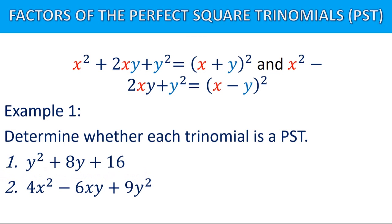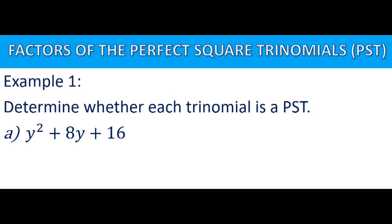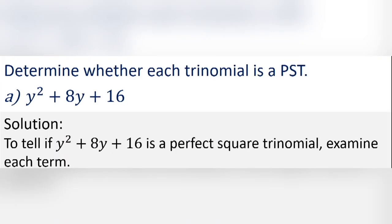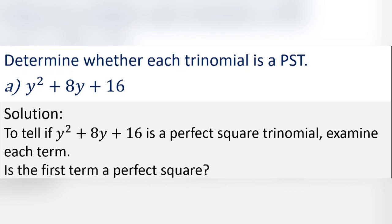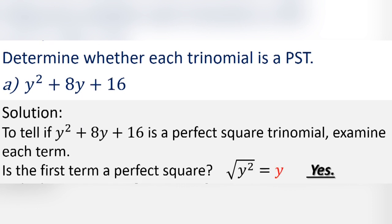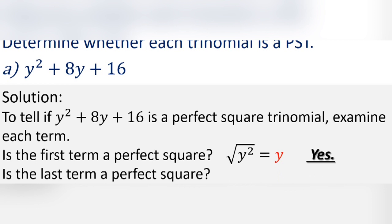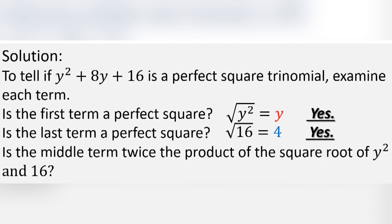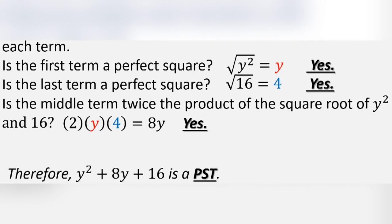Determine whether each trinomial is a PST. To tell if y squared plus 8y plus 16 is a perfect square trinomial, examine each term. Is the first term a perfect square? Square root of y squared is y — yes, it is. Square root of 16 is 4 — yes. Is the middle term twice the product of the square roots? 2 times y times 4 equals 8y — yes. Therefore, y squared plus 8y plus 16 is a perfect square trinomial.